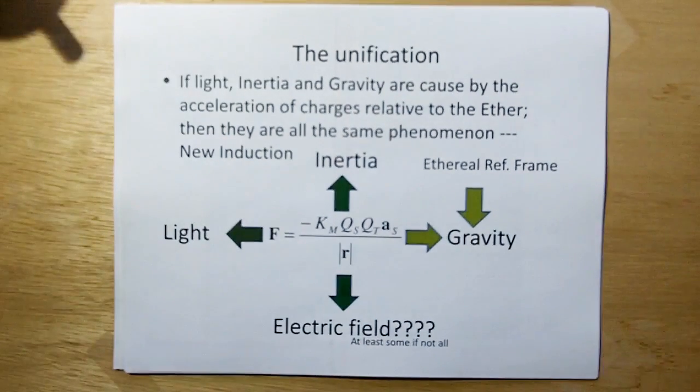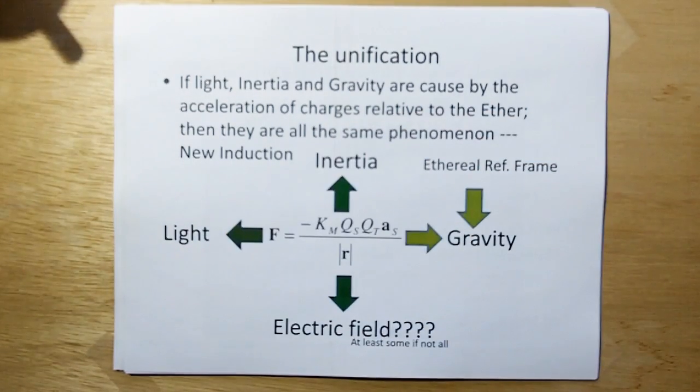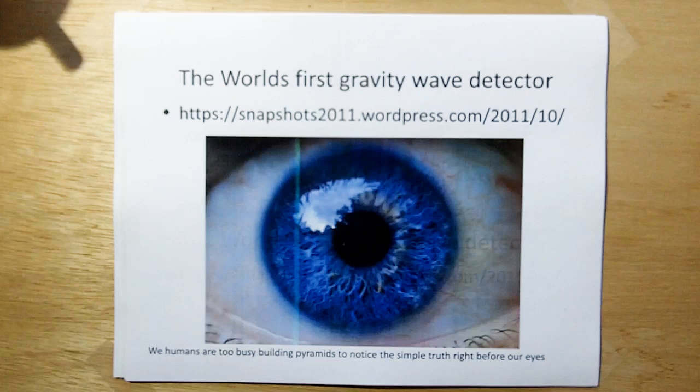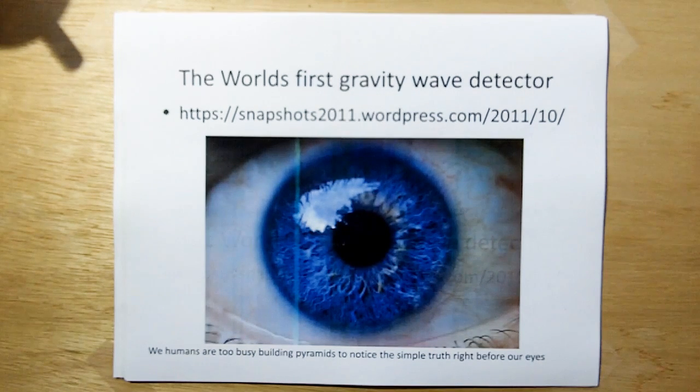So here's the unification. If light, inertia, and gravity are caused by the acceleration of charges relative to the ether, then all are the same phenomenon. Light, inertia, and gravity are all the same phenomenon. And therefore, we've had the world's first gravity wave detector since the beginning of time. It's just we're too stupid to know. And so these imbeciles that released the thing saying, oh, we finally detected Einstein's gravity waves are really out to lunch. They have no clue what they're doing. The simple Mark I eyeball is a gravity wave detector. But we humans are too busy building pyramids to our own arrogance and stupidity to notice the simple truth right before our eyes.